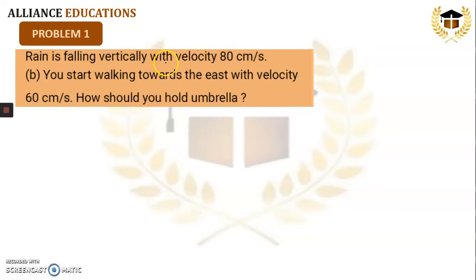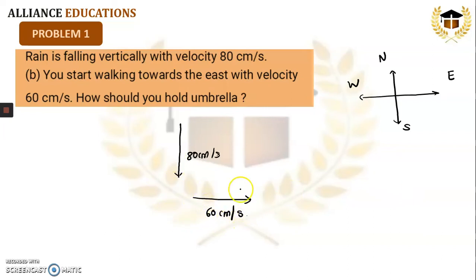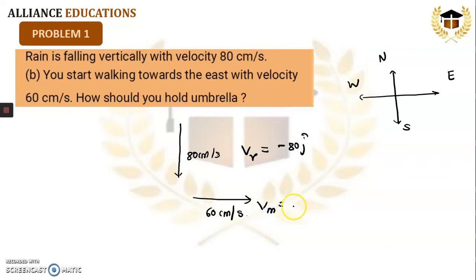One more question: Rain is falling vertically with velocity 80 cm per second. You start walking towards east with velocity 60 cm per second. Here a direction is given. Let us first understand the directions — east, west, north, and south. Rain is falling vertically at 80 cm/s and the person is walking east at 60 cm/s. So velocity of rain is minus 80j and velocity of man is 60i.